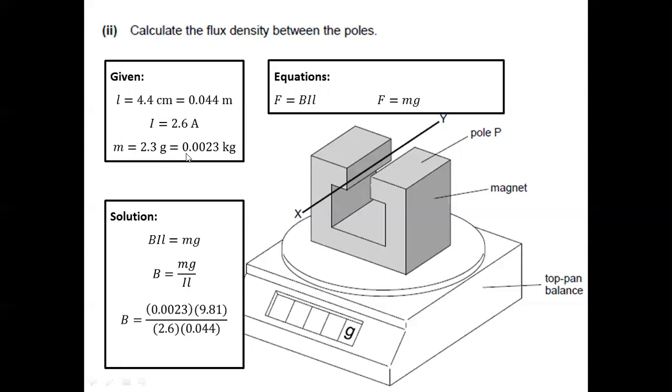Substituting the given information. And of course, for G, it's going to be 9.81, the acceleration due to gravity. Calculating B, we will have a value of 0.20 Tesla.